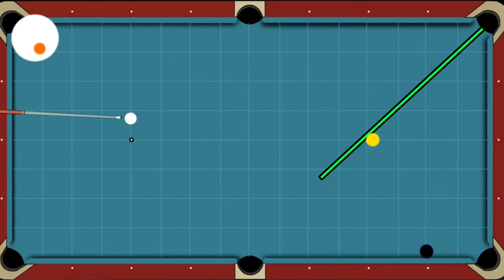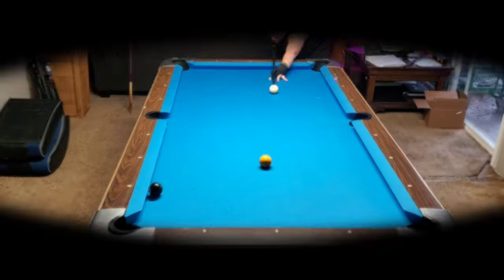You can get shape on the eight ball playing low-right English, but since there are better options, it would be my last resort.